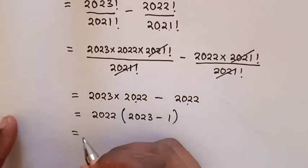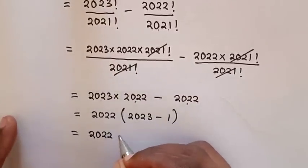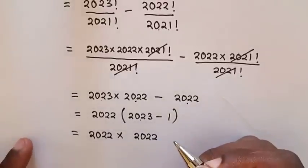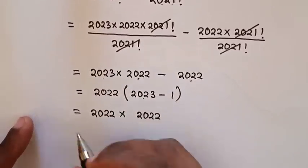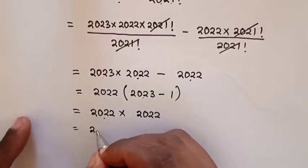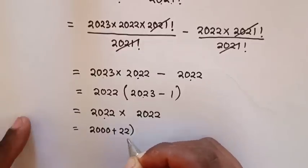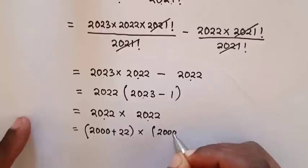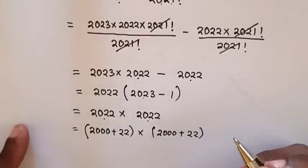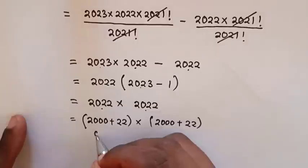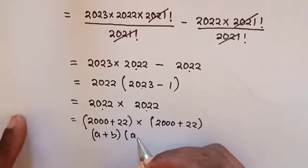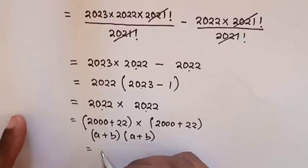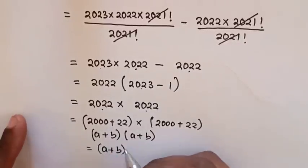Then it will be equal to 2022 times 2022, which is 2022 squared. Now, 2022 is the same as 2000 plus 22, so this is (2000 plus 22) times (2000 plus 22). We will apply the rule that (a plus b) times (a plus b) equals (a plus b) squared.